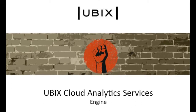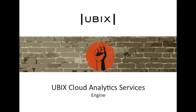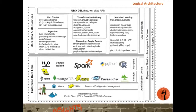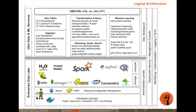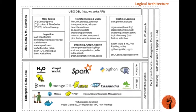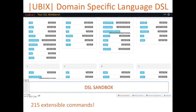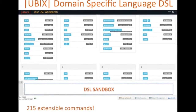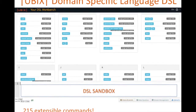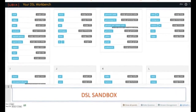The pilot was run on the Ubix Cloud Analytics Engine, which combines leading open source technologies in a scalable enterprise-class technology stack. These diverse core technologies are unified with a powerful domain-specific language, or DSL, which allows AutoCurious to easily choreograph the engine's actions. Power users can also interact directly with the engine via the DSL sandbox.